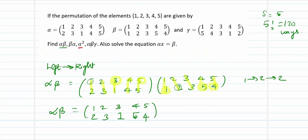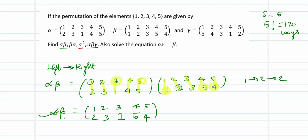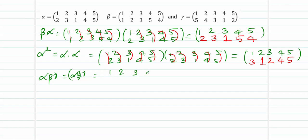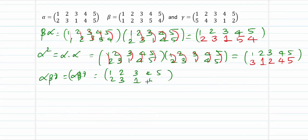The next quantity needed is alpha beta gamma. Alpha beta gamma equals alpha beta times gamma. Alpha beta has already been computed. Let me take the value for alpha beta — that is (1, 2, 3, 4, 5) → (2, 3, 1, 5, 4) — and place a copy of gamma next to it: gamma is (1, 2, 3, 4, 5) → (5, 4, 3, 1, 2).